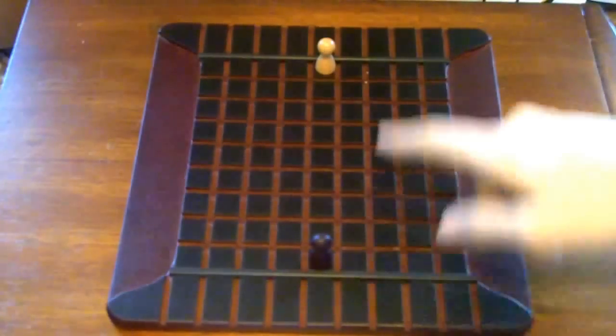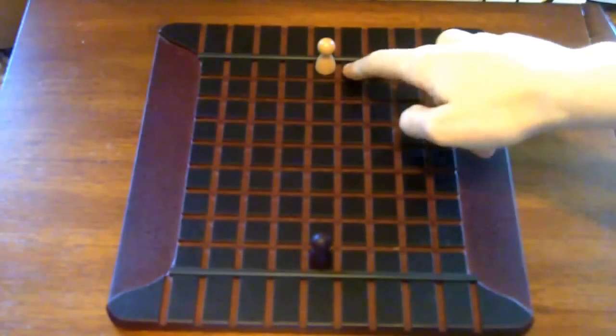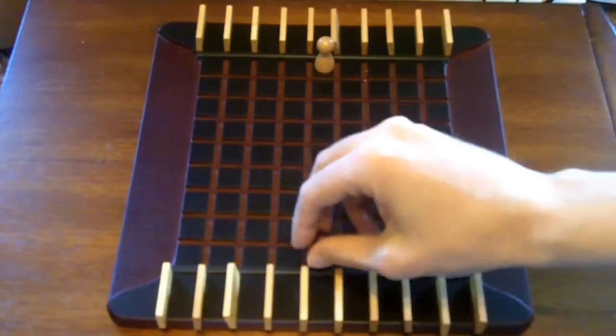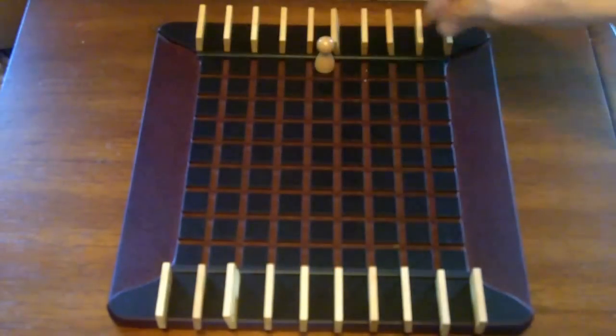Set up the game by putting a pawn in the center on each side of the board and giving each player ten walls. The goal of the game is to get your pawn to any space on the other side of the board.